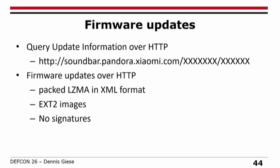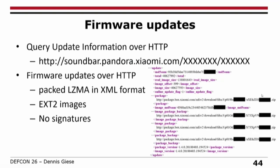Speaking of firmware updates, they query firmware update information over HTTP — and the firmware package is also downloaded over HTTP. At the top you have the MD5 checksum of the firmware image. This is packed in XML format containing the images. Again, no signatures. So basically you can do DNS redirection and push any firmware you want on this device. This is a little scary in terms of software quality, because actually they have an SSL stack and OpenSSL on this device, so they could do SSL if they wanted — but apparently they don't want to.